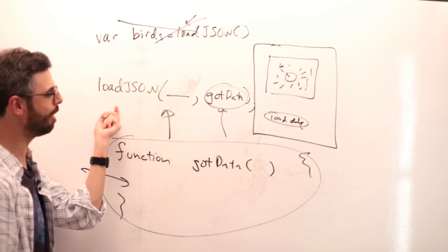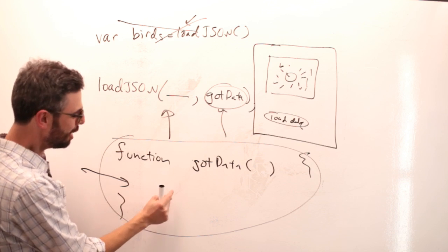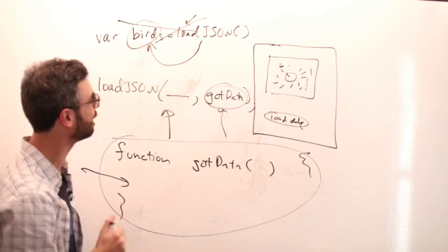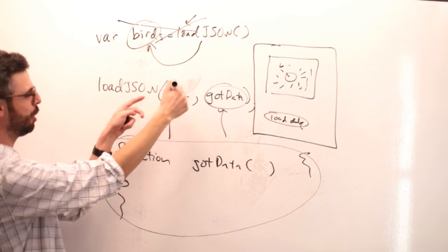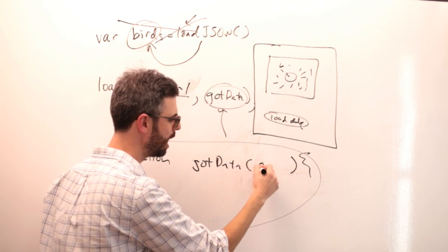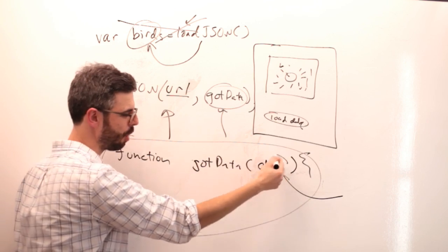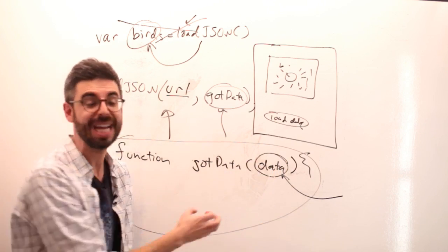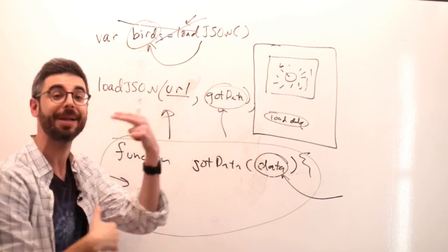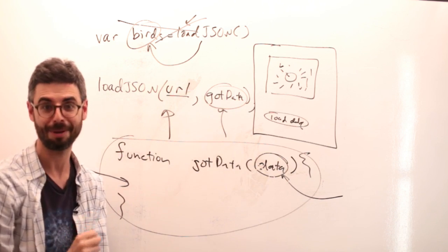I give it the URL, I give it the callback, and then this function is triggered when the data is ready. The question is: where is the data? There's no variable anywhere — just the URL, the loadJSON function, and the callback. The special way p5 works is if you add a parameter to your callback function definition — I'm calling it 'data' — p5 behind the scenes will fill that variable with the data. So it's like you said: data variable equals the result of loadJSON, but it happens asynchronously.